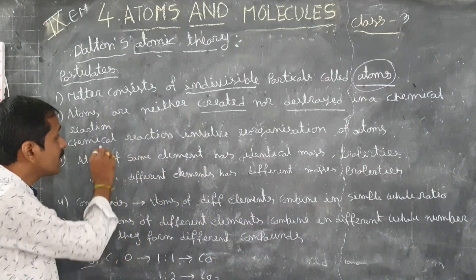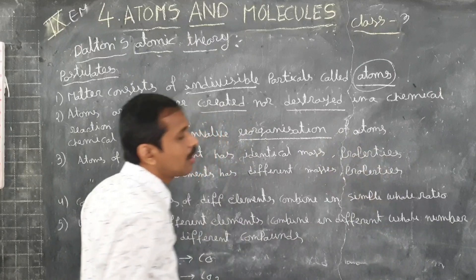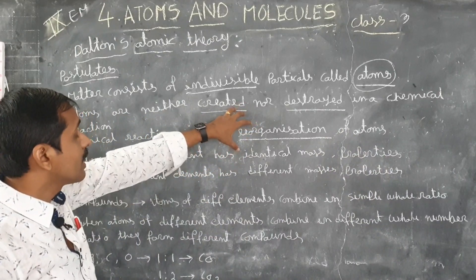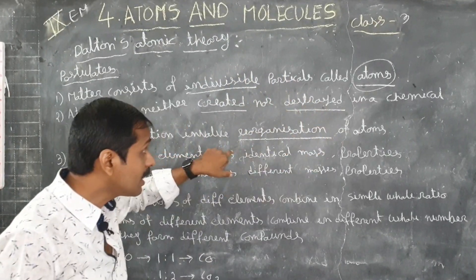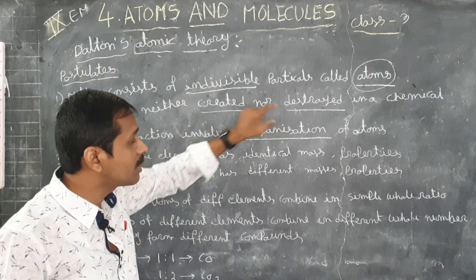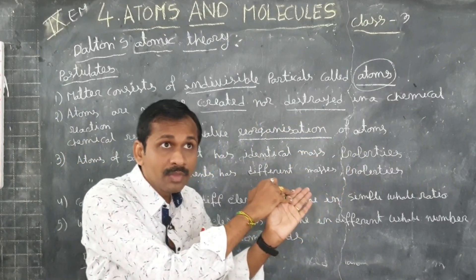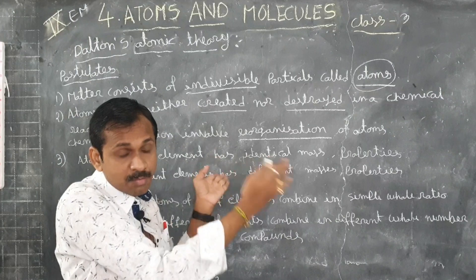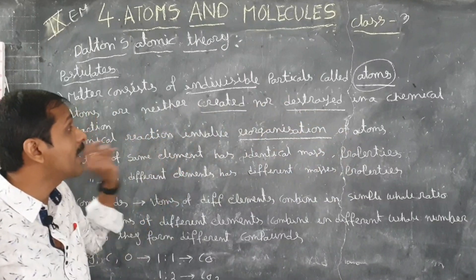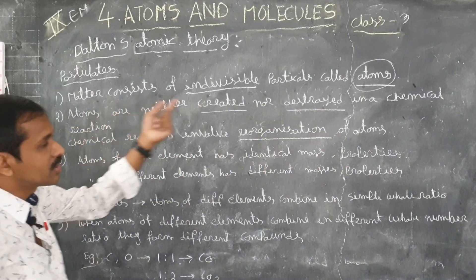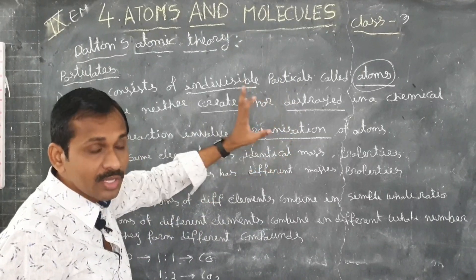What does that mean? A chemical reaction involves re-organization of atoms. In a chemical reaction, atoms are not created or destroyed — what happens is re-organization. The atoms are re-organized in a chemical reaction — neither created nor destroyed, but re-organization of atoms takes place.